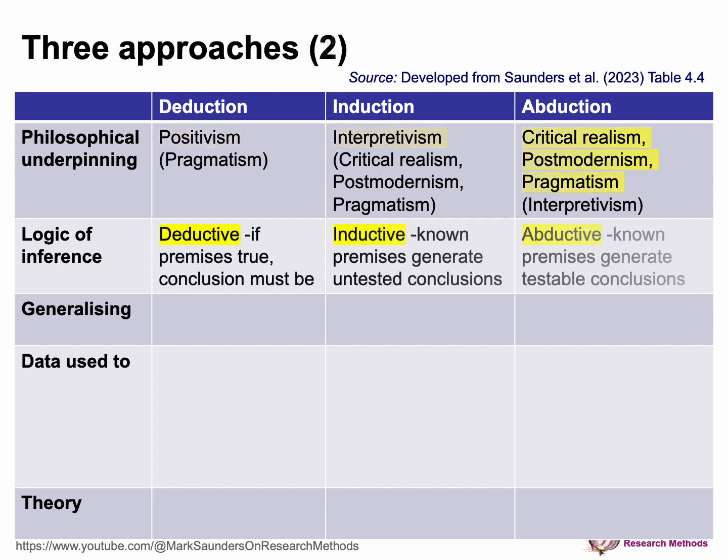Looking at the logic of inference: for deduction, if the premises are true, the conclusion must be true also. For induction, we know the premises and generate untested conclusions, because we're building from the data to the premises. With abduction, our logic of inference is abductive — we know the premises and generate conclusions which are then tested. It's that circular idea we saw in the previous diagram.